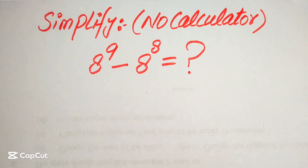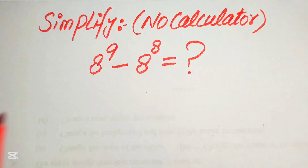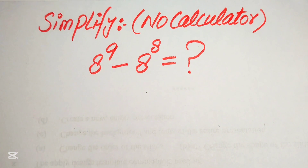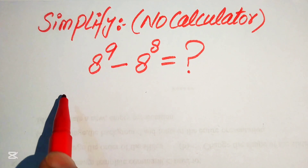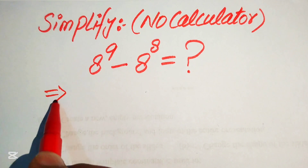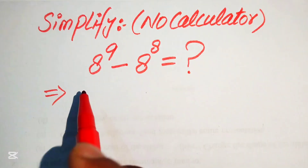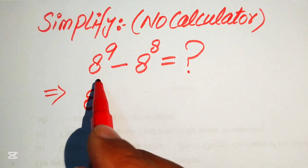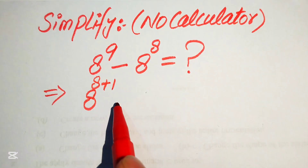Welcome. We are going to solve this algebraic expression without using a calculator — remember, calculator is not allowed. We will write this in simplified form, showing all working on paper. The very first step is to focus on the exponent of the first term. The exponent is 9, so we write it as 8 to the power of 8 plus 1, since 8 plus 1 equals 9.